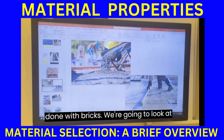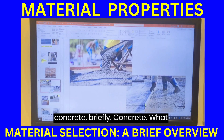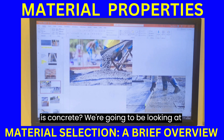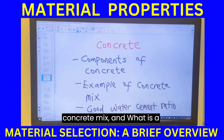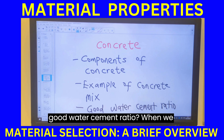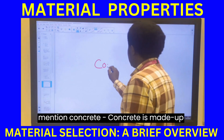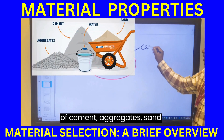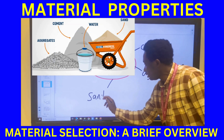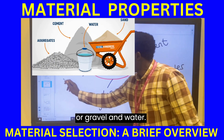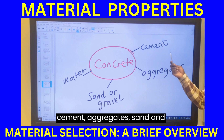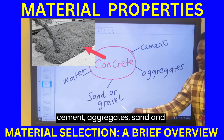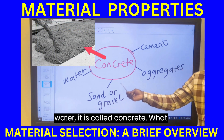We are done with bricks. Now let's look at concrete. Concrete is made up of cement, aggregate, sand or gravel, and water. When we put cement, aggregate, sand, and water together, it is called concrete. Concrete is a binder that glues aggregates together.